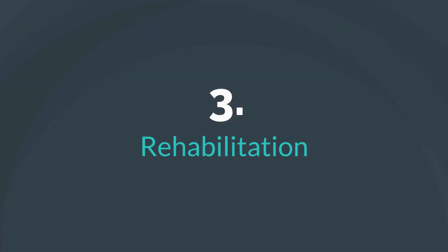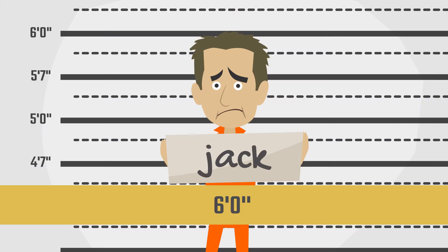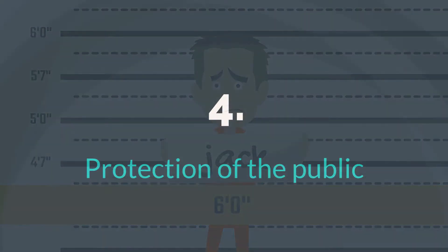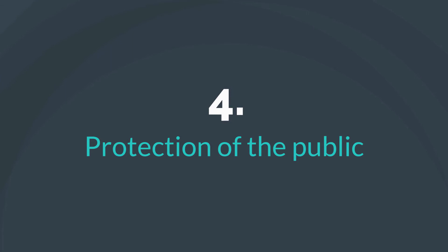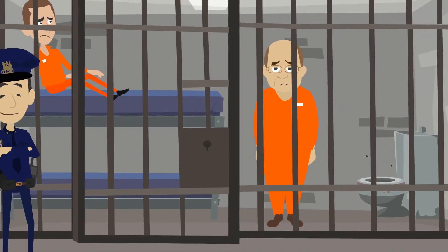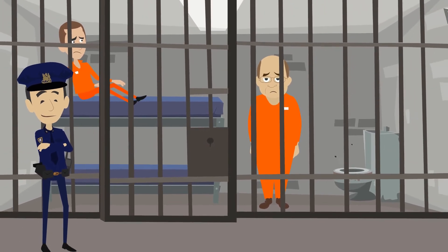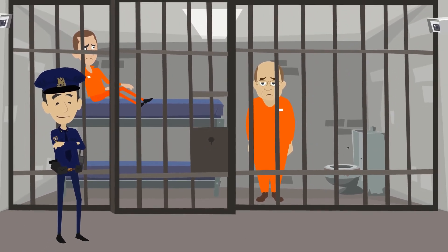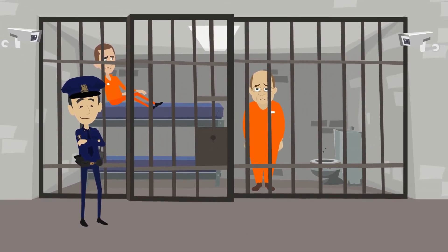Third is rehabilitation — the principle that the punishment is intended to change the behavior of the offender and help them become productive citizens. Fourth is protection of the public — the principle that the punishment should protect the public by jailing the offender or impose conditions designed to control the offender's behavior in order to ensure the safety of the public.